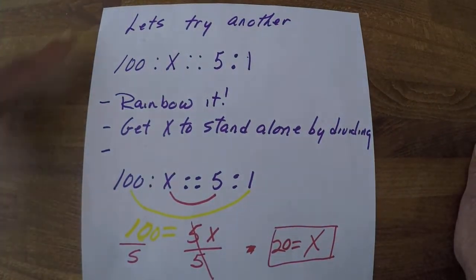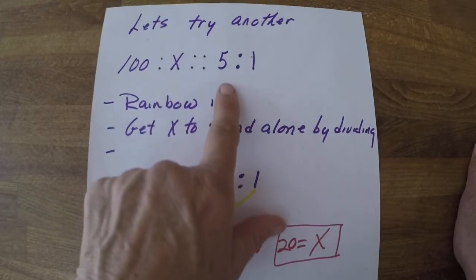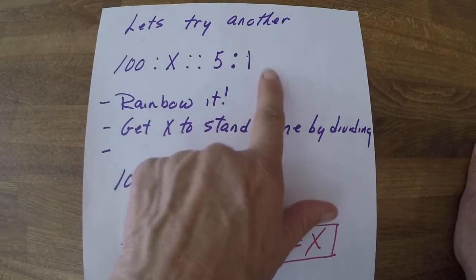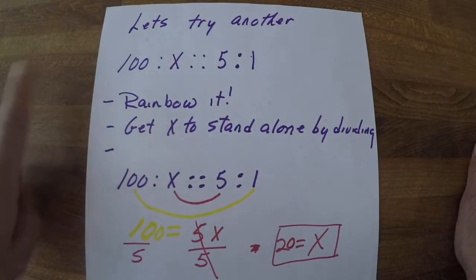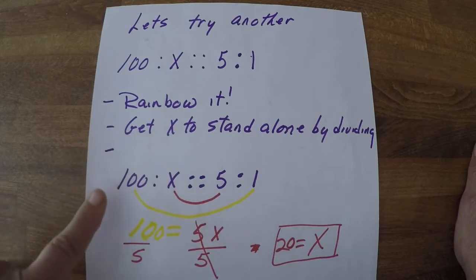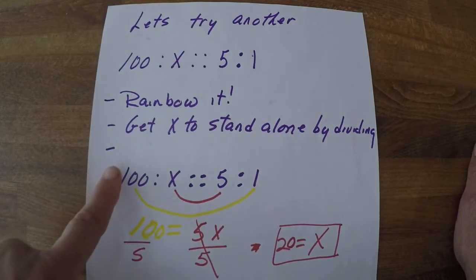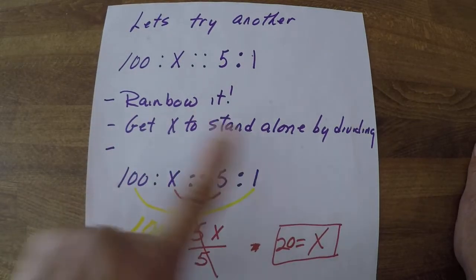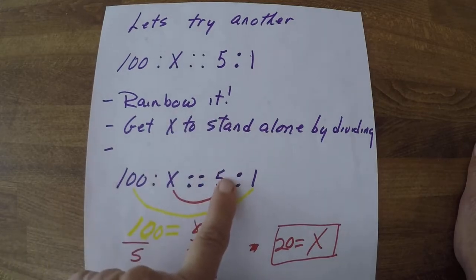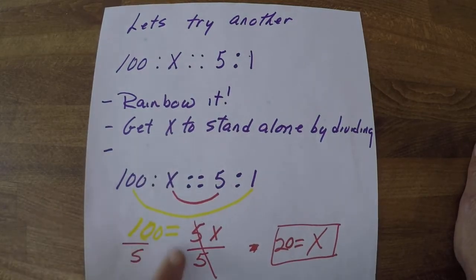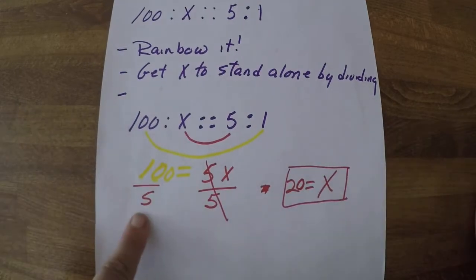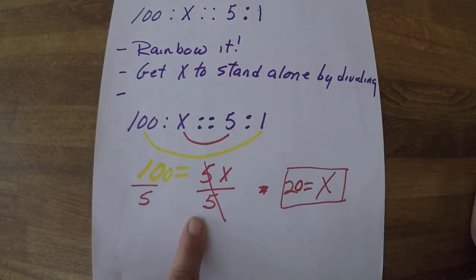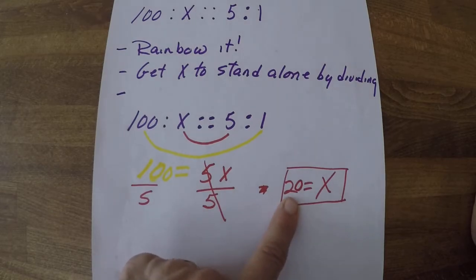Let's try another one. We have 100 is to x as 5 is to 1. Let's rainbow it and solve for x. 100 times 1 and x times 5, so we have 100 equals 5x. Divide both sides by 5 so x will stand alone, and x equals 20.